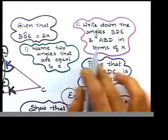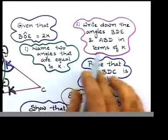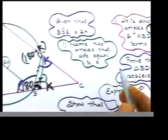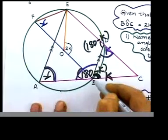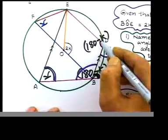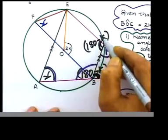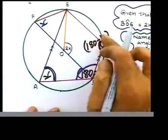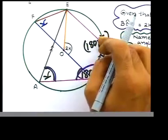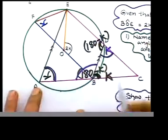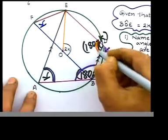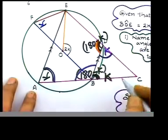Write down the angles BDE and ABD in terms of k. What is BDE? Come on, think. BDE, where is BDE? B is here, D is there, E is here. We have written that in terms of k: 180 minus k. In terms of k means your answer should contain k and any other number. That's what they actually wanted you to look at. That angle there is 180 minus k.